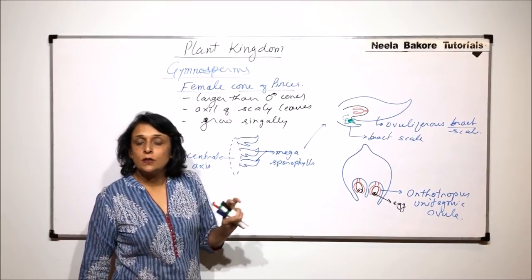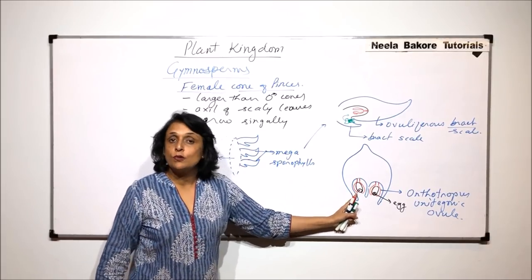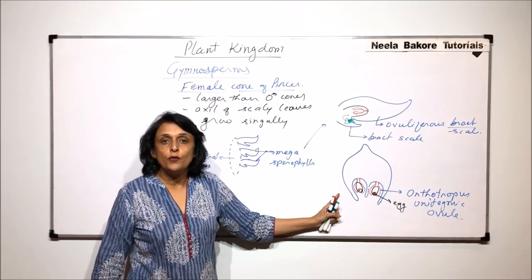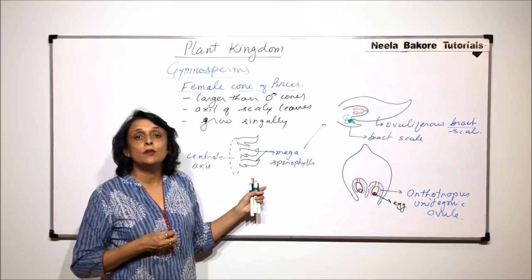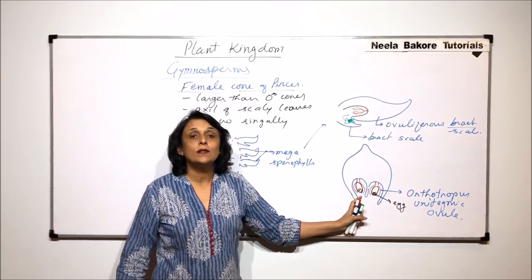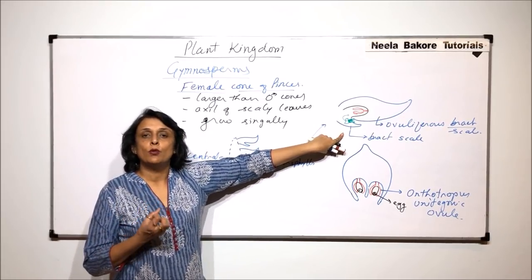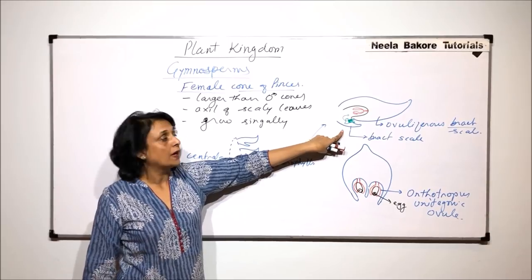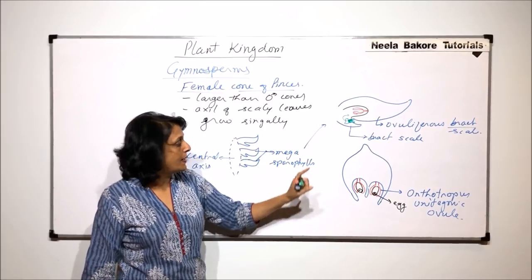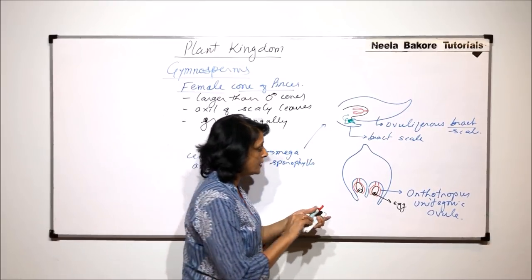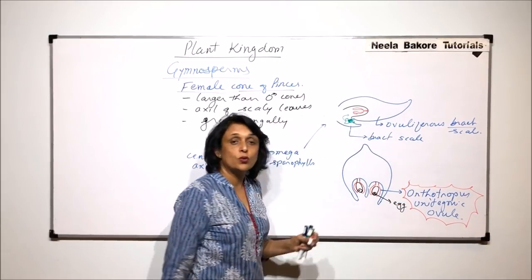As the ovules are not enclosed inside any ovary, this ovule will change into seed. But because of absence of ovary, there is no cover outside that seed. That means it is not going to be enclosed inside any fruit, and that is why we call these seeds naked seeds. The function of this bract scale is to hold that pollen grain which has reached here through the wind and trap it there so that it stays till fertilization takes place. The ovule is orthotropous unitegmic.